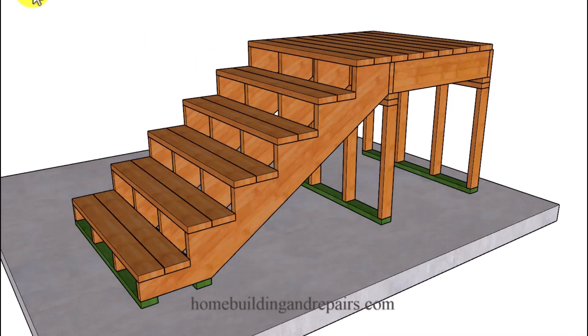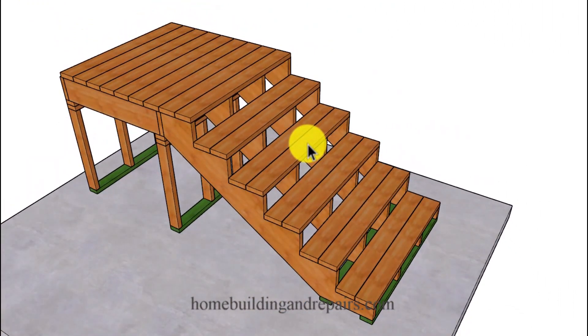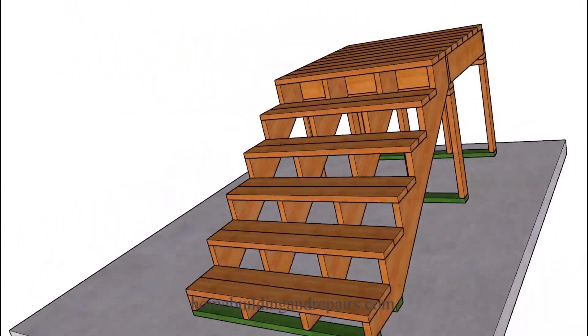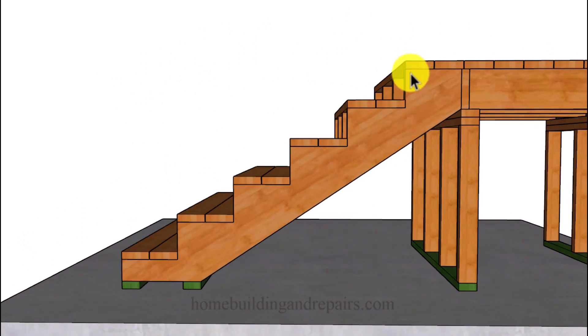I'm not going to be using a ledger this time. I believe I have other videos on that. But in this video we are going to attach the top of the stringer to the bottom of the flooring, or in other words have the top of the stair stringer even with the top of the floor joist.